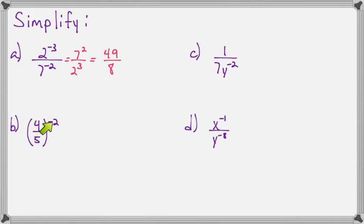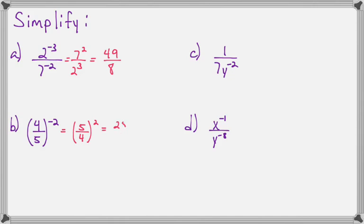For part B, I'm going to think of the negative as causing the fraction to flip over, so that will be 5 fourths to the second power. Now I square the top and square the bottom, so that's 25 over 16.